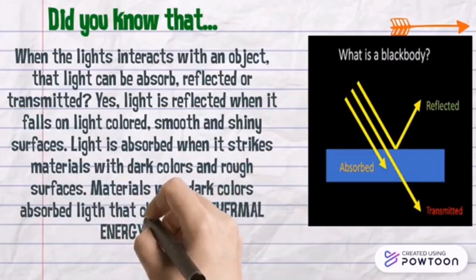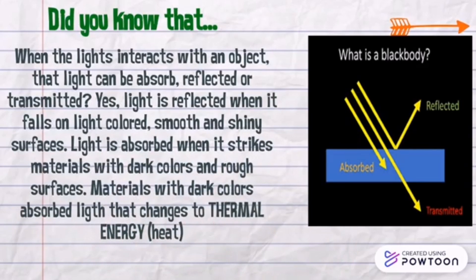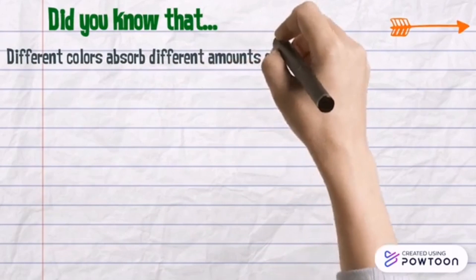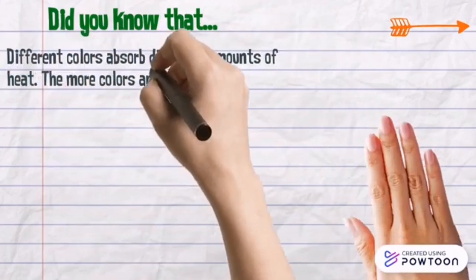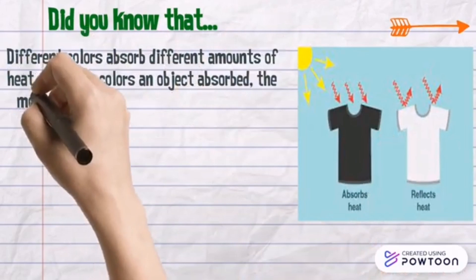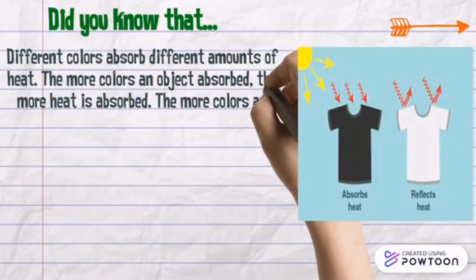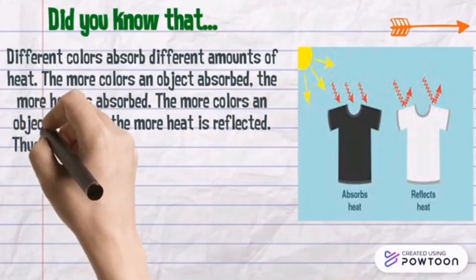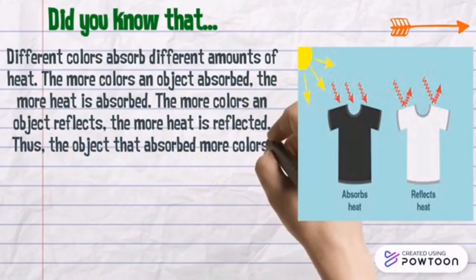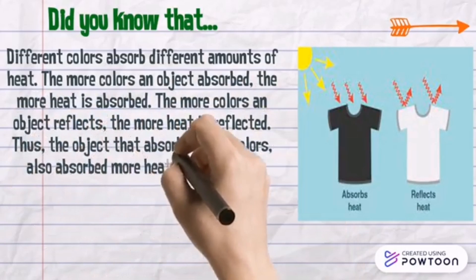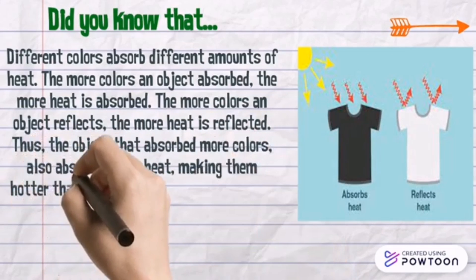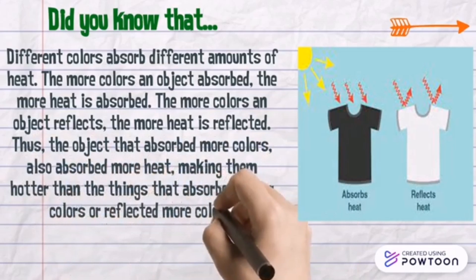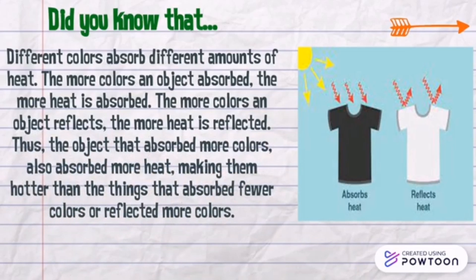Materials with dark colors absorb light that changes to thermal energy. Different colors absorb different amounts of heat. The more colors an object absorbs, the more heat is absorbed. The more colors an object reflects, the more heat is reflected. Thus, objects that absorb more colors also absorb more heat, making them hotter than things that absorb fewer colors or reflect more colors.